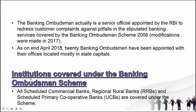The institutions covered under the Banking Ombudsman Scheme are: all scheduled commercial banks, Regional Rural Banks (RRBs), and scheduled primary cooperative banks, i.e., Urban Cooperative Banks (UCBs).